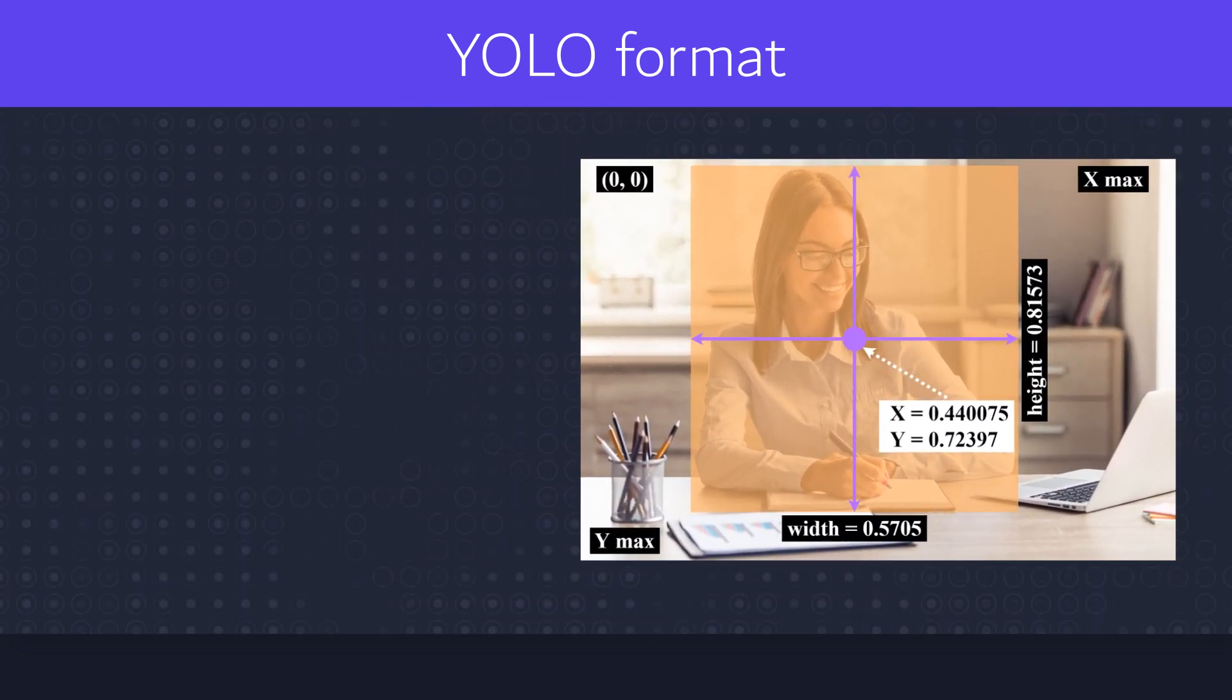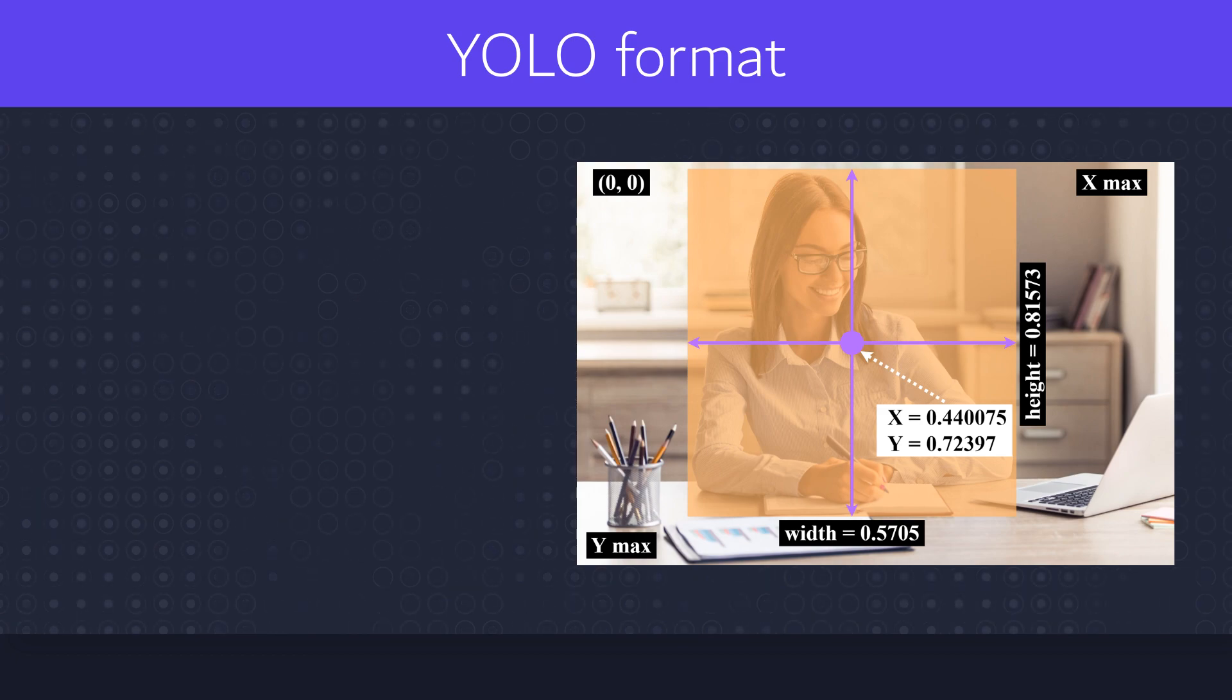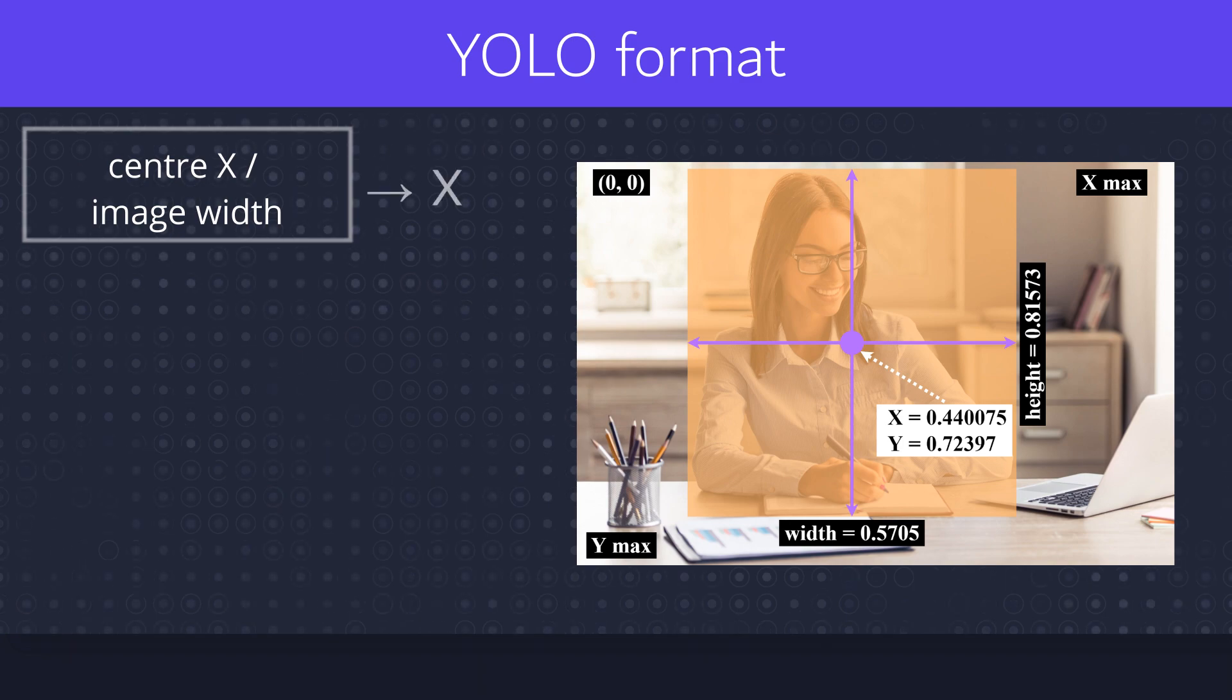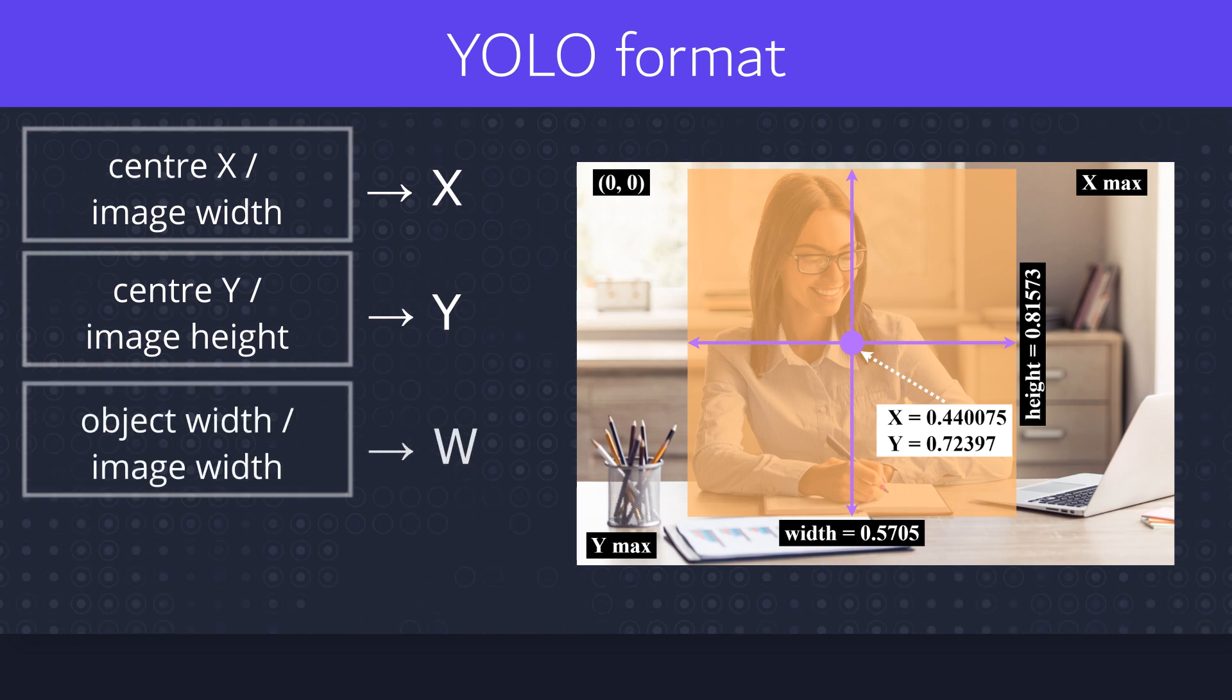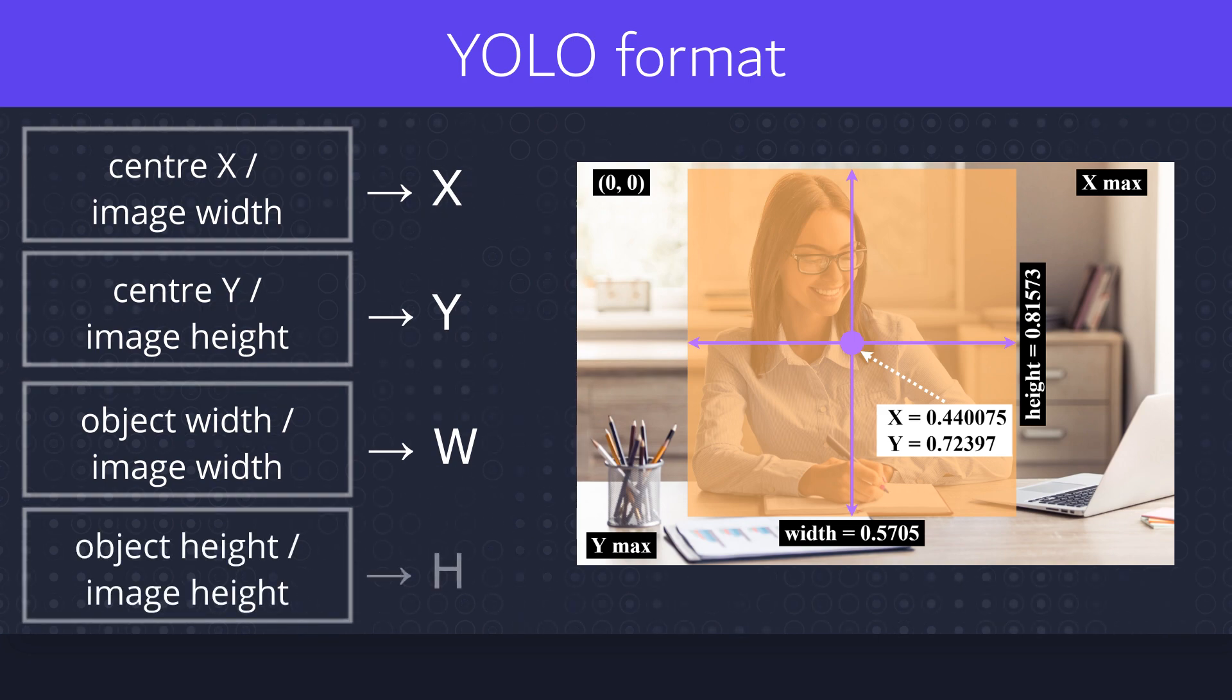Here are the equations used to normalize bounding box coordinates. Object center along x-axis is divided by entire image width. Object center along y-axis is divided by entire image height. Object width is divided by entire image width, and object height is divided by entire image height.